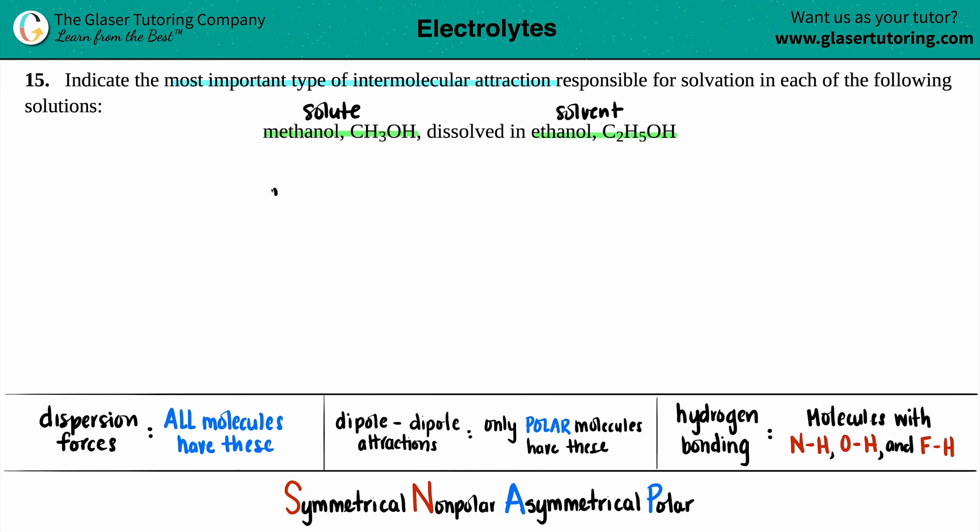I'm going to write these down: CH3OH and C2H5OH. The easiest way to go about these types of questions is just listing out all of the intermolecular forces that the methanol has and all of the intermolecular attractions that ethanol has. Then the most important type is generally the maxed one that they both have in common.